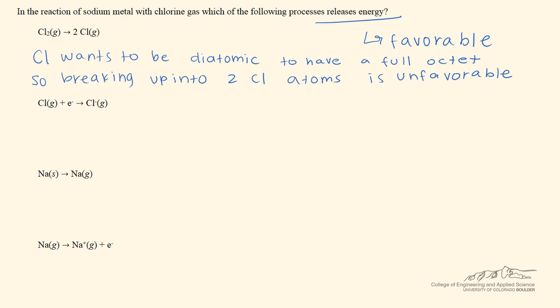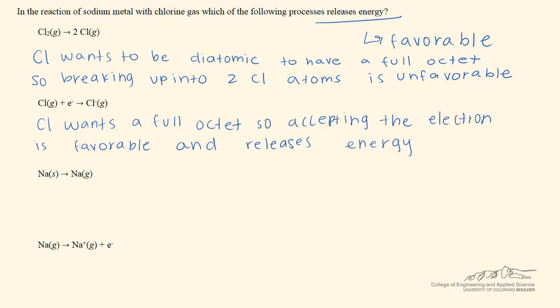Chlorine is electronegative, so it makes sense that it wants to take in this electron. Because this reaction is favorable and leads to a more stable situation, this will release energy. This reaction is the answer to the problem statement.